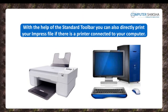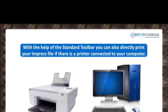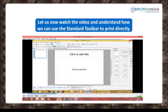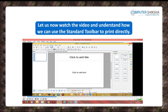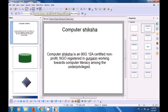With the help of the Standard Toolbar, you can also directly print your Impress file if there is a printer connected to your computer. For doing this, use the option for Print File Directly. Take the cursor to the icon which has a printer and says 'Print directly' and click there. The file gets printed. This is the option you will use to print your file directly on the printer if you have a printer attached.